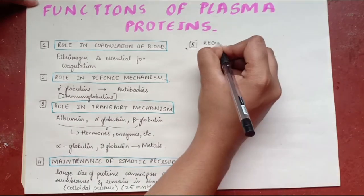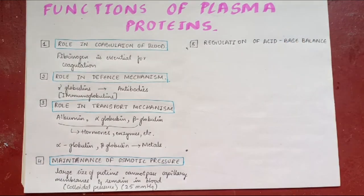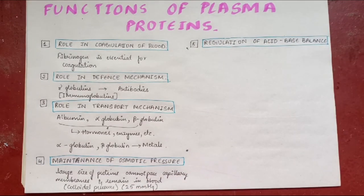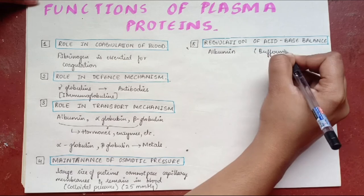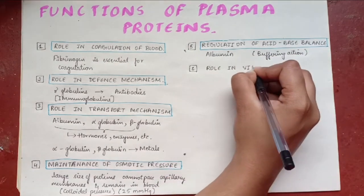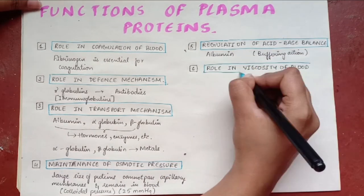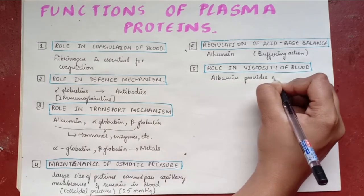Regulation of acid-base balance. Albumin plays an important role by the virtue of the buffering action. Role in viscosity of blood. Albumin provides maximum viscosity than other plasma proteins.